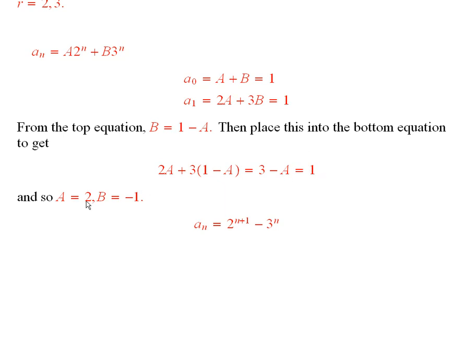And therefore a is equal to 2. Well if a is equal to 2, then b is equal to negative 1. And so I put a 2 for a here and a negative 1 here. And then a sub n is 2 to the n plus 1 minus 3 to the n.